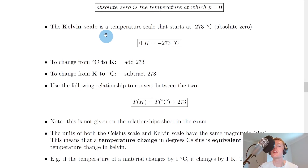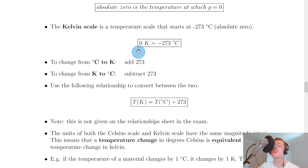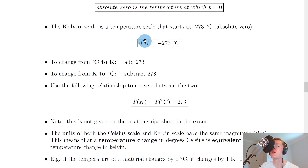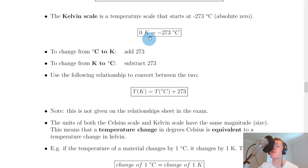The Kelvin scale is a temperature scale that starts at minus 273 degrees Celsius, also known as absolute zero. So zero Kelvin equals minus 273 degrees Celsius, because this temperature is the start of the Kelvin scale. Everything else on the Kelvin scale is similar to the Celsius scale but shifted along by 273 degrees.